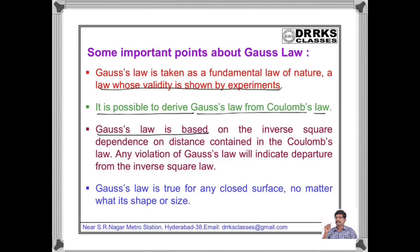Gauss law is based on the inverse square dependence on distance contained in Coulomb's law. Any violation of Gauss law will indicate departure from the inverse square law.